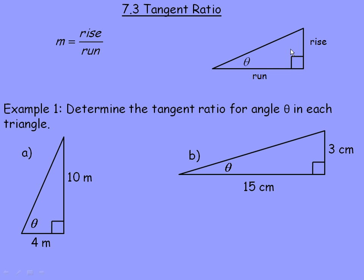In any right triangle, if we call this the angle theta, the angle theta has a lot to do with how steep this line is — this is the hypotenuse. The larger the slope, the bigger the angle. The smaller the angle, the shallower or smaller the slope.